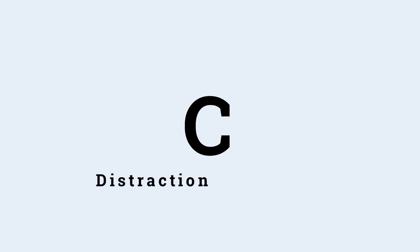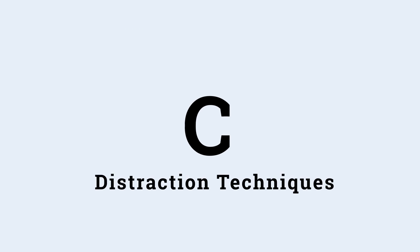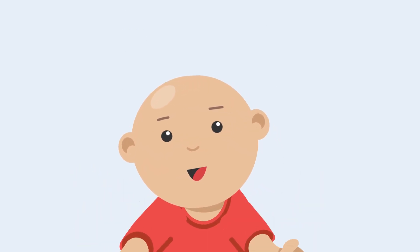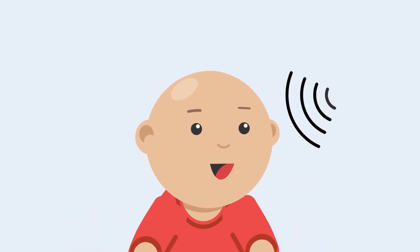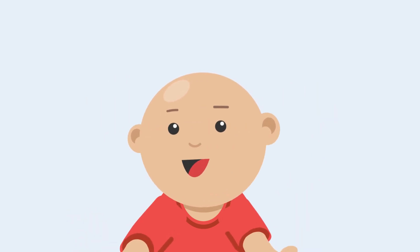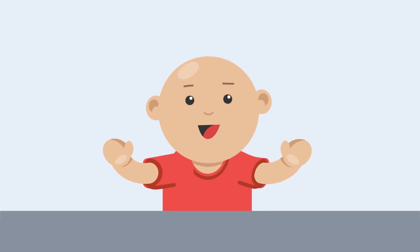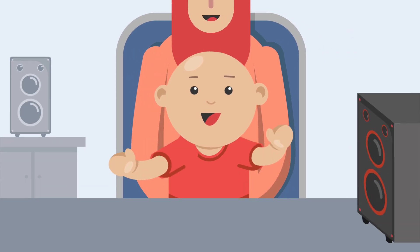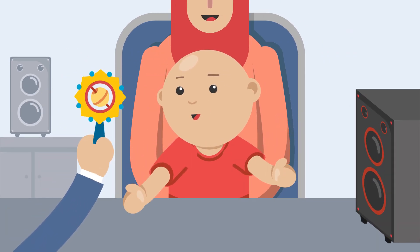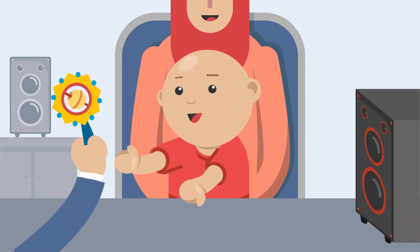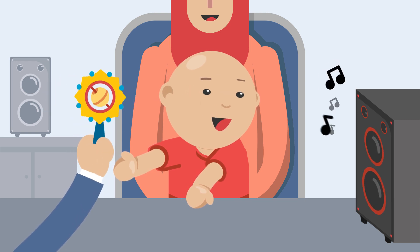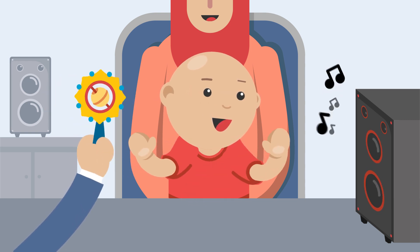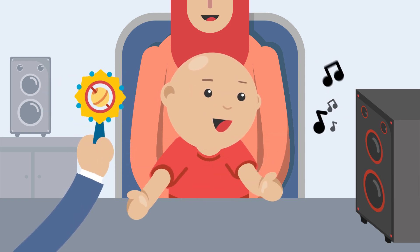C - Distraction techniques are used in children 6 to 7 months old. The child at this age turns his head to locate the source of sound. In this test, the child is seated in his mother's lap. An assistant distracts the child's attention while the examiner produces a sound from behind or from the side to see if the child tries to locate it.